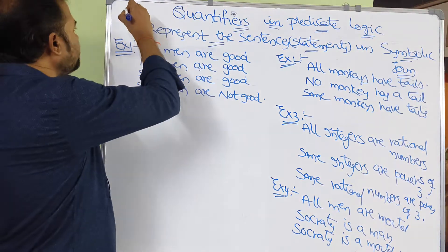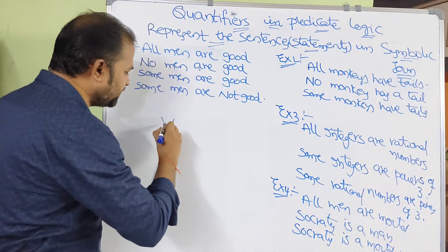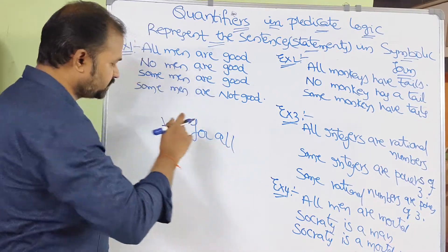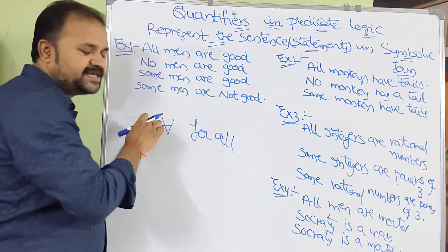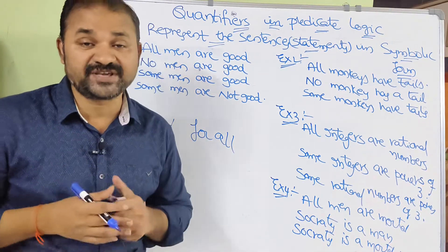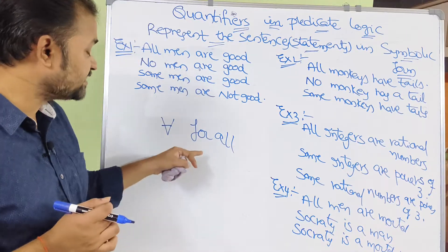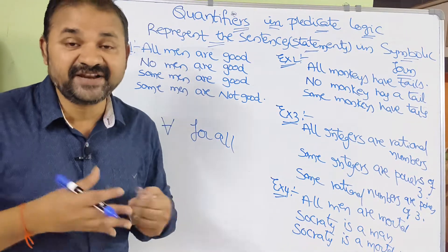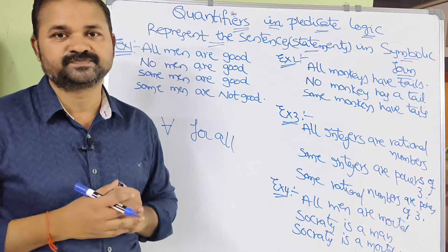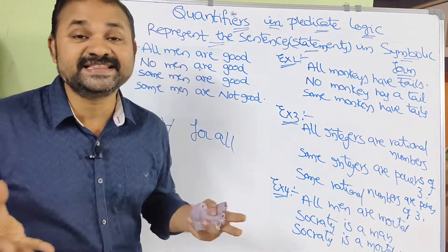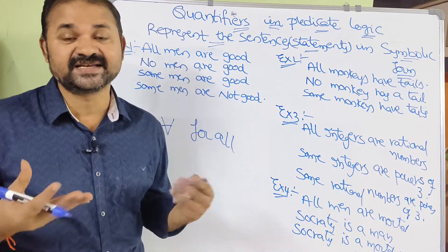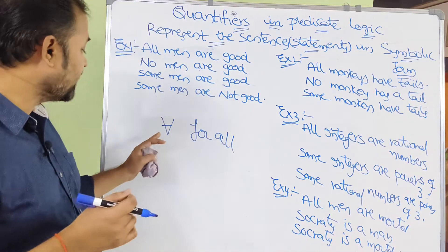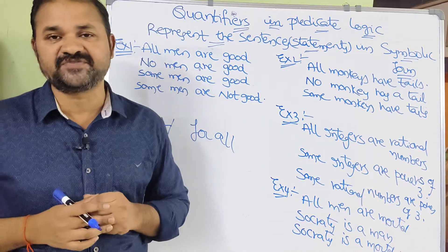The universal quantifier is represented by this symbol — we call it 'for all'. This symbol is the reverse of the letter A. If a sentence contains the words all, every, each, anything, everything, or for each, then we have to use the universal quantifier.